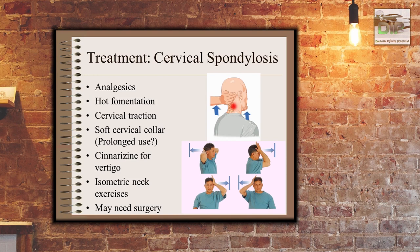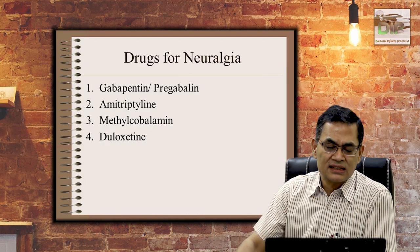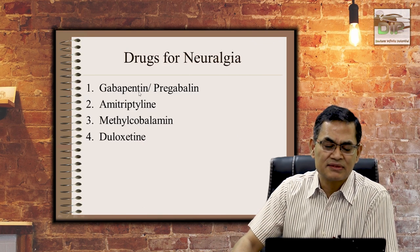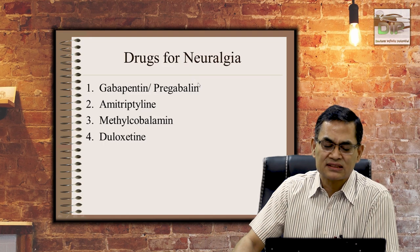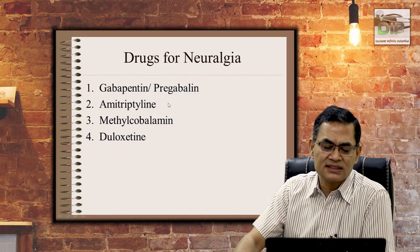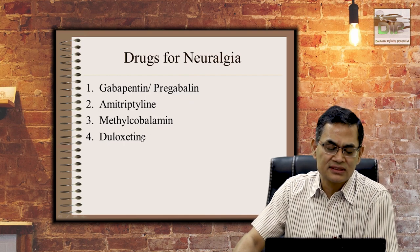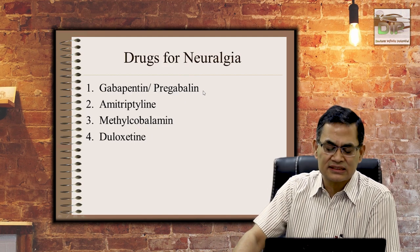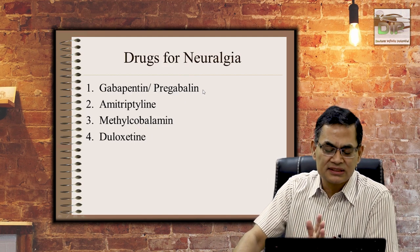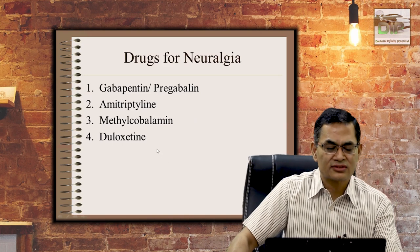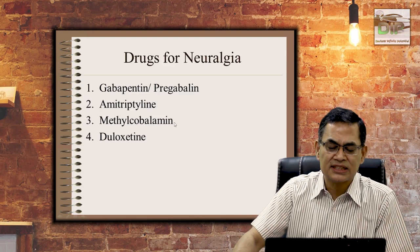If conservative management doesn't work, the patient may need surgery, especially if there is a neurological deficit. Before surgery, medications for neuralgic pain should be tried: gabapentin, pregabalin, amitriptyline, methylcobalamin, and duloxetine. Nowadays it is advisable to combine two or three of these medicines, and most come in combination formulations.